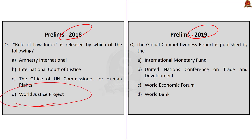The World Justice Project (WJP) is an American independent multi-disciplinary organization. Its main mission is to advance the rule of law around the world. It also releases an index called the Rule of Law Index. So the correct answer is option D, World Justice Project.